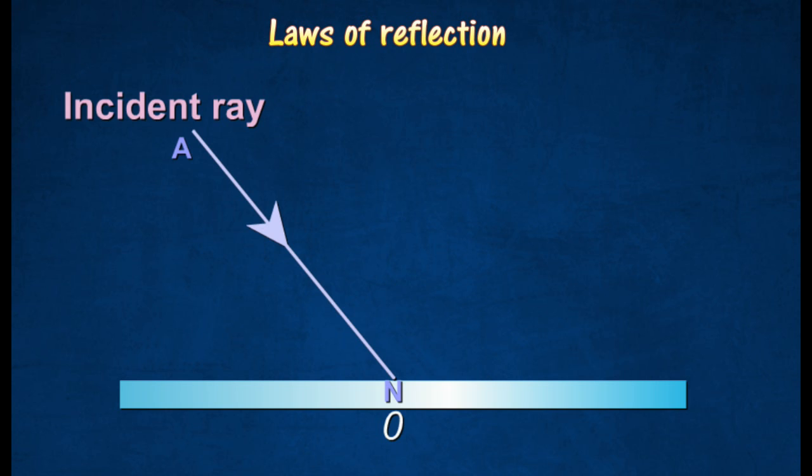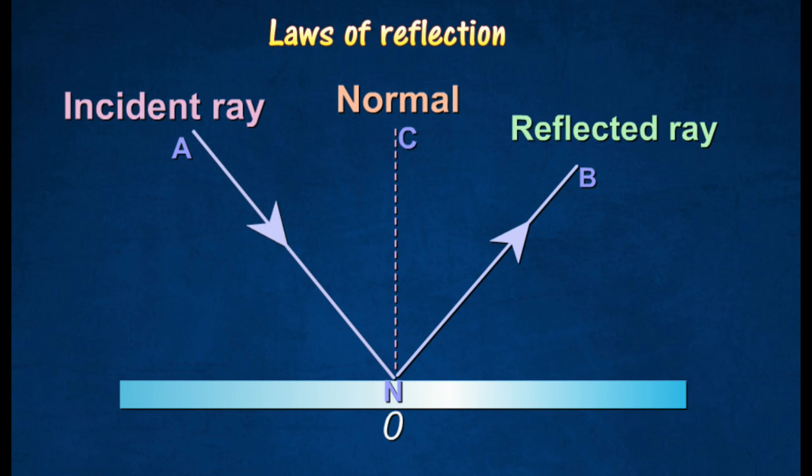AN is called the incident ray. NB is called the reflected ray. CN is called the normal, or line perpendicular to the mirror at the point of incidence N.